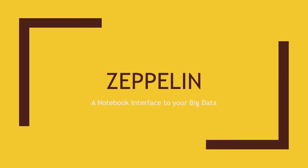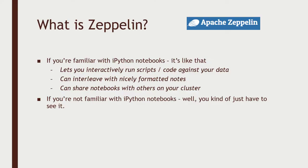Zeppelin is a notebook interface to your big data. If you've ever seen an IPython notebook, it's the same idea as that. And if you haven't seen an IPython notebook and you don't know what that means, you kind of just have to see it to understand it. Don't worry — we're just going to talk about this for a couple of minutes before we dive in and play with it, and it's going to make a lot more sense when you see what it can do.